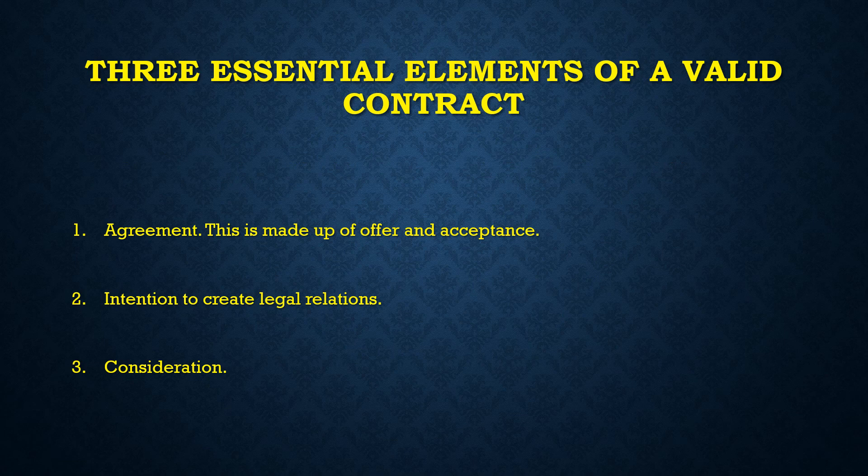The three essential elements of a valid contract under English law are: agreement, made up of offer and acceptance; intention to create legal relations; and of course consideration. Here we will examine offer and acceptance. It is a meeting of the minds of the two parties — consensus ad idem. The meeting of the offer with the corresponding acceptance constitutes the agreement.